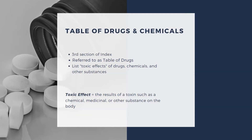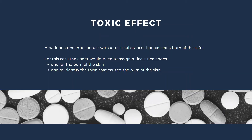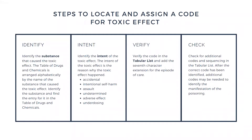If additional signs, symptoms, or manifestations of the poisoning are present, they should be coded in addition to the code for the toxic effect. For example, if a patient came into contact with a toxic substance that caused a burn of the skin, the coder would need to assign at least two codes — one for the burn of the skin and one to identify the toxin that caused the burn.